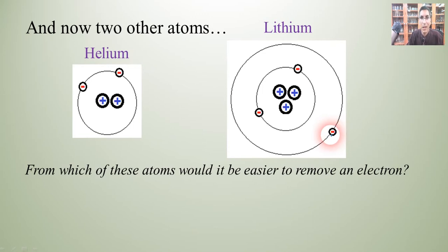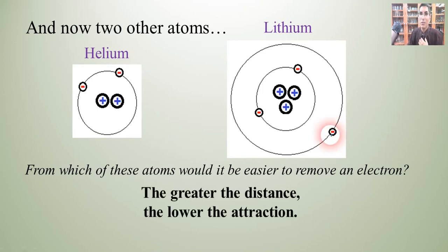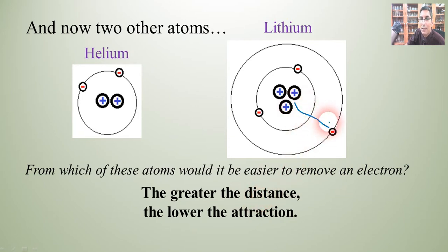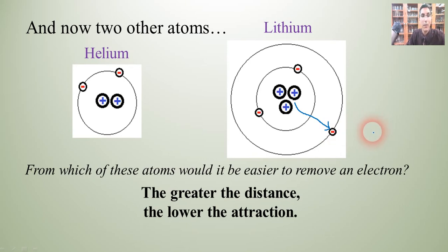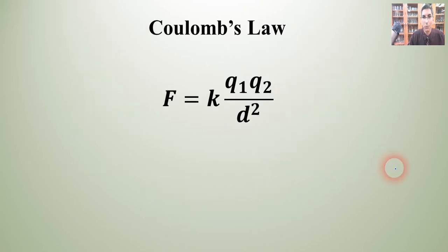What do we learn from this example? This time, it's not so much the charge that makes the difference — it's the distance. The greater the distance, the lower the attraction. Here we have a fairly high distance to that electron, so that outermost electron can leave much more easily. These two examples help us illustrate something we use quite a bit in chemistry and physics: it's called Coulomb's Law.